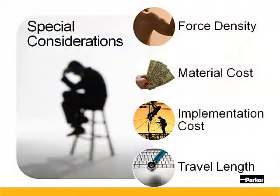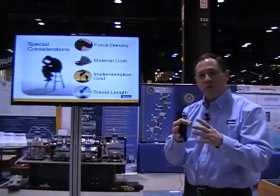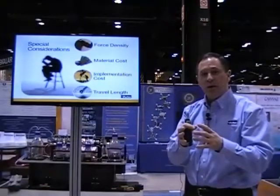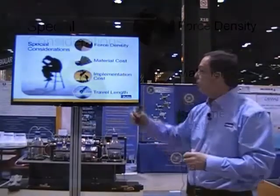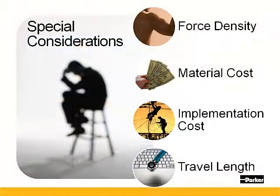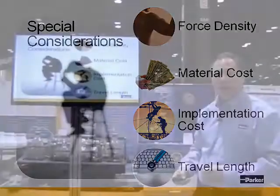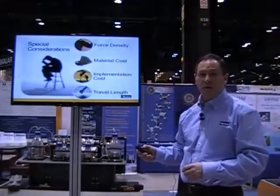From a special consideration standpoint, there are four factors to deal with. Force density — if you need to produce a lot of force in a small contained area, there are different drivetrains to look at, especially for the mechanical advantage. The material costs, which we all have to maintain within check relative to the value the drivetrain adds to the process. Implementation costs, which is sometimes forgotten because in some cases the material cost is overshadowed by actually implementing the technology. And then travel length — some drivetrains have limitations on how far they can travel.